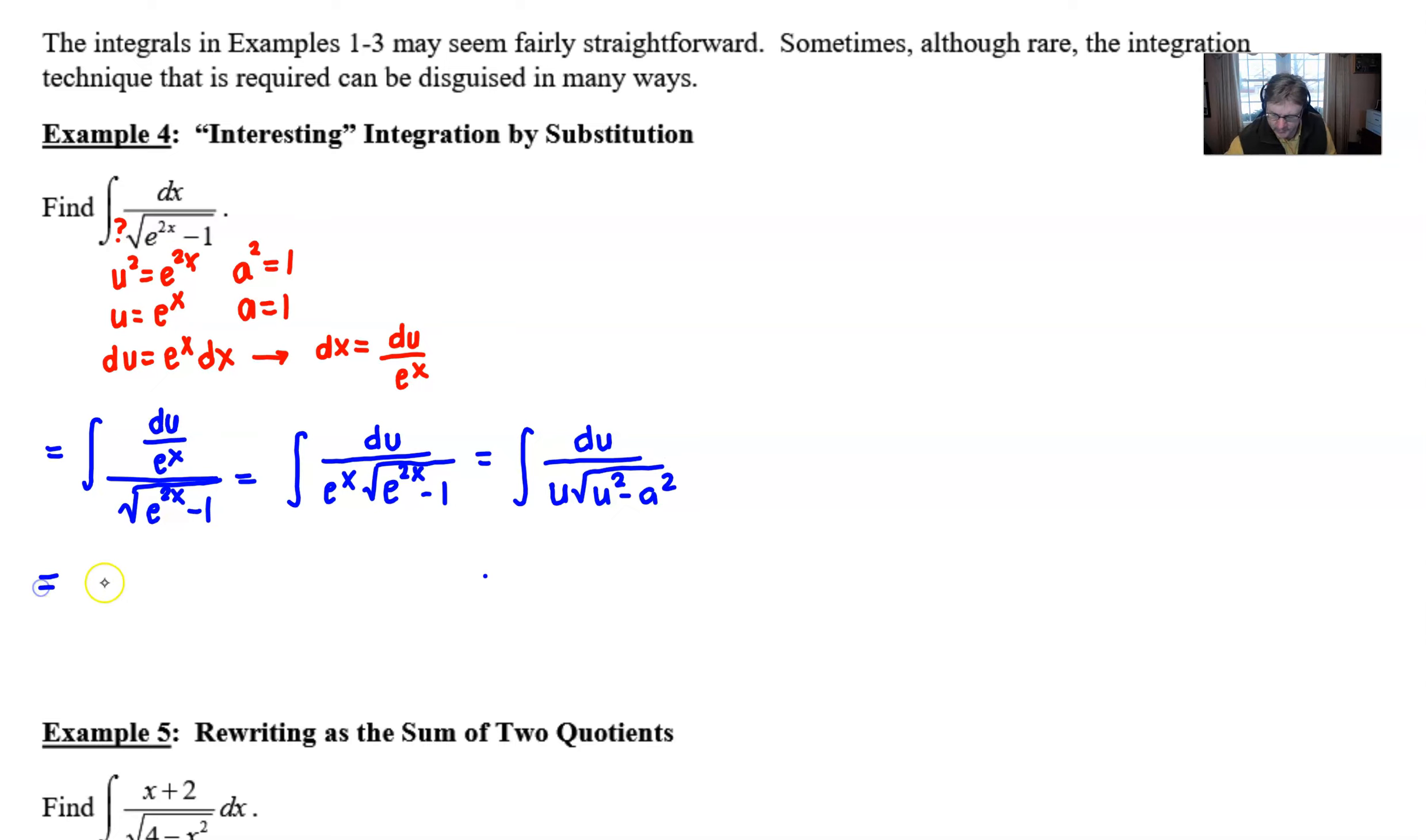Once we arrive here, we know that this is just 1 over a. Well our a is going to be 1 times the arc secant of the absolute value of u over 1.